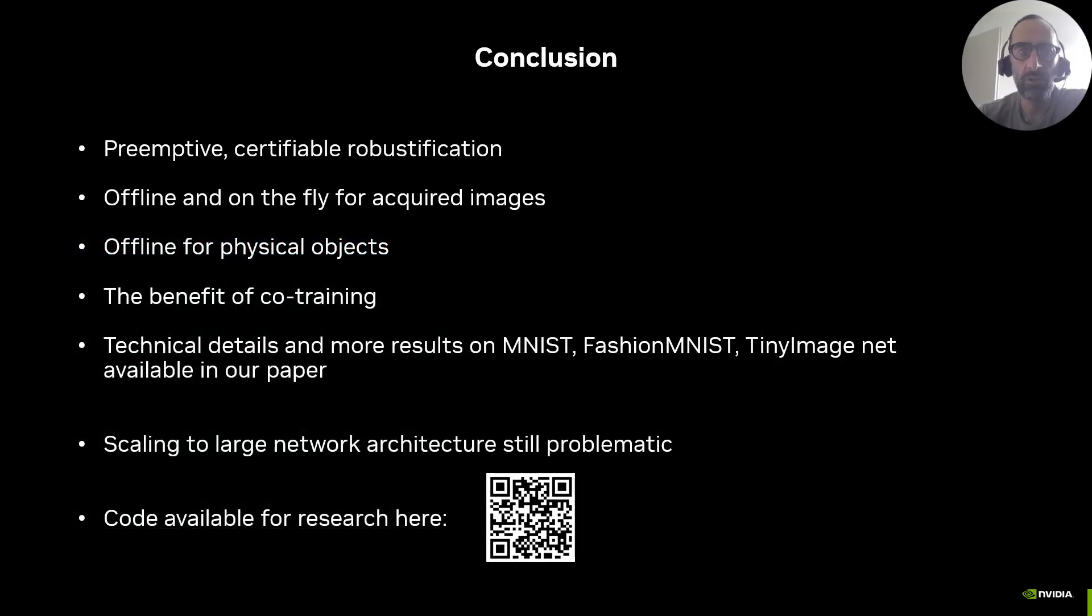In conclusion, we have demonstrated that A5 allows preemptive certifiable robustification offline and on-the-fly for acquired data, and offline for physical objects. We have also shown the benefit of co-training with the classifier. More technical details and results are described in our paper. We have also observed at least one limitation of the proposed method: scaling to large architecture remains problematic, as for other methods based on bound computation. To allow further investigation of this aspect and more, we release our code in the provided link. Thanks.